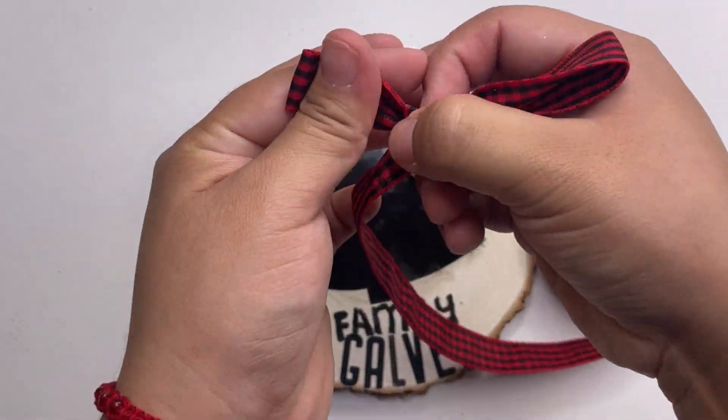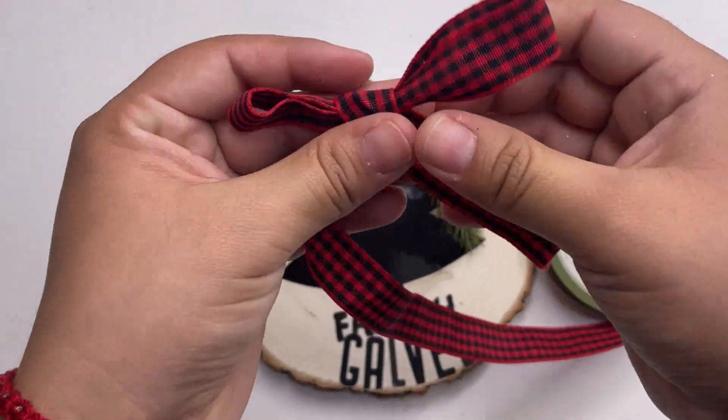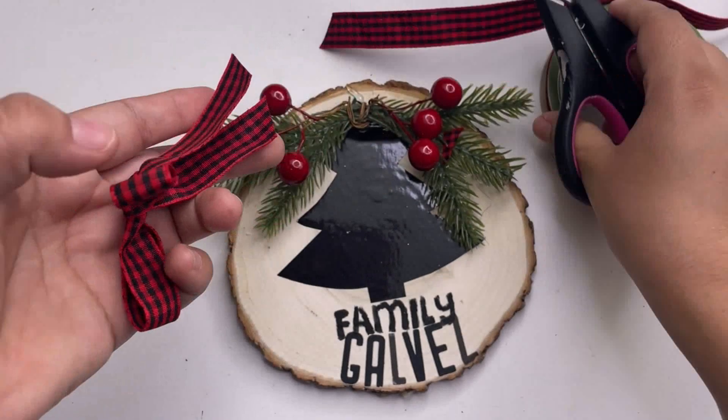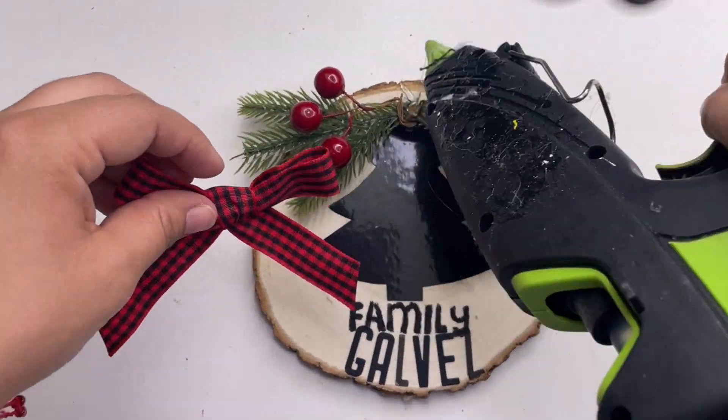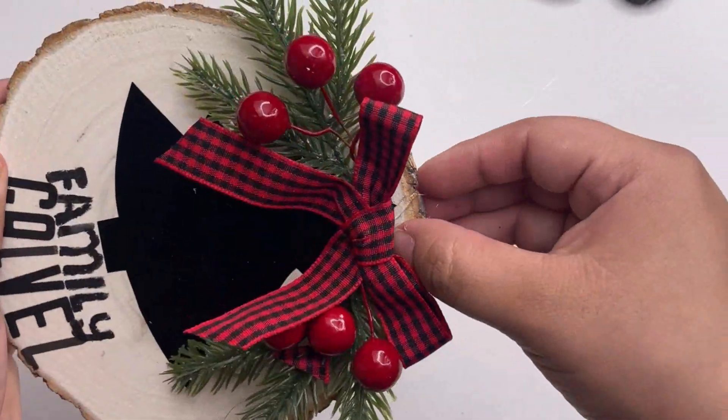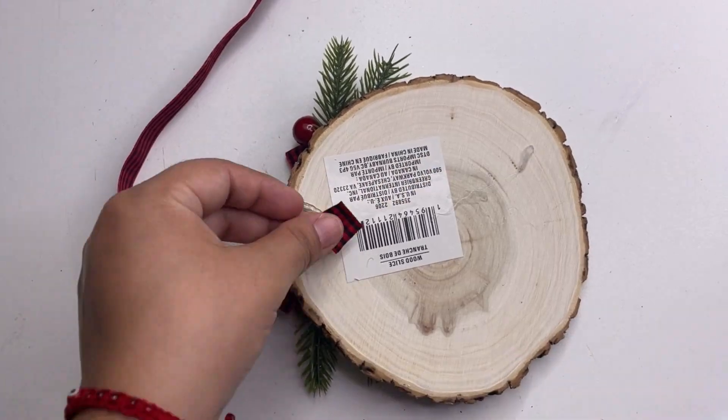These Dollar Tree wood slices already come with a hanger. I removed it because I used this for something else and then I am using it again to make this Dollar Tree ornament. But that is it, look how beautiful this personalized ornament turned out. Now this is also great to give as a gift.